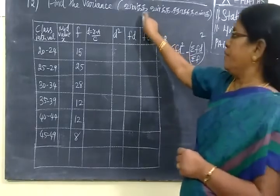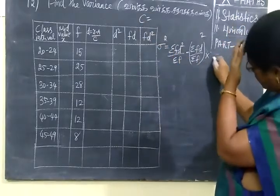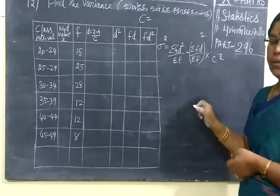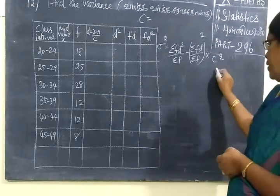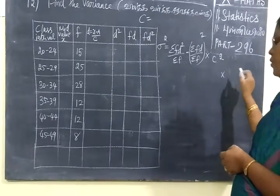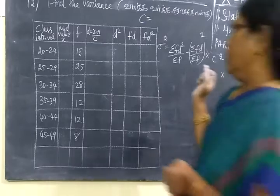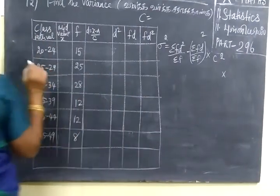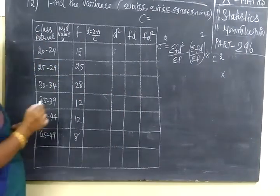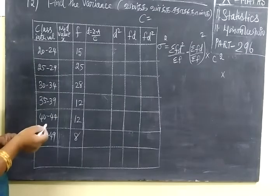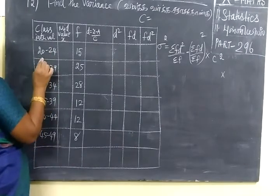Suppose if you find C is 20.0, C square, you write C square. After writing C square, I told you to write the value here. Now you write mid value, put the class interval.